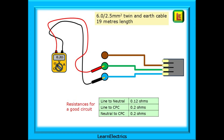Putting these into a little table — and it's good practice to write things down, don't trust to memory. We have line to neutral at 0.12 ohms, line to CPC at 0.2 ohms, and neutral to CPC also at 0.2 ohms.